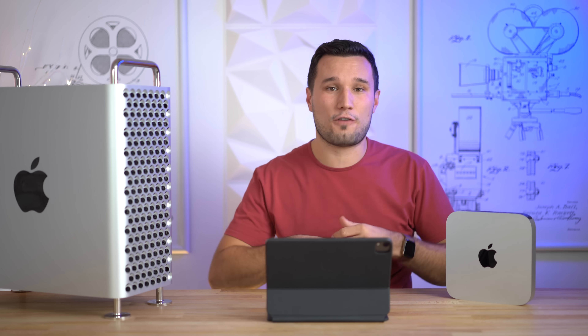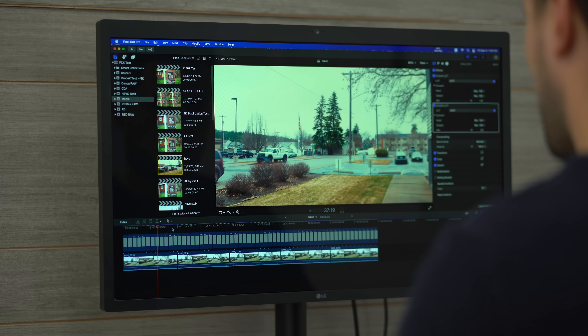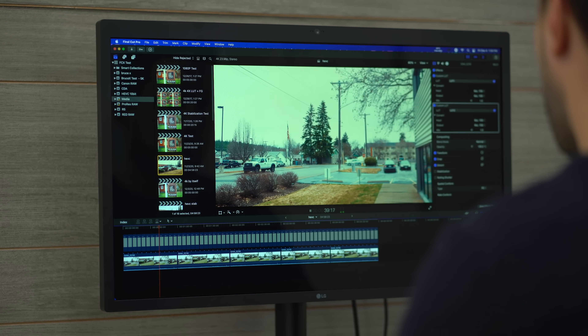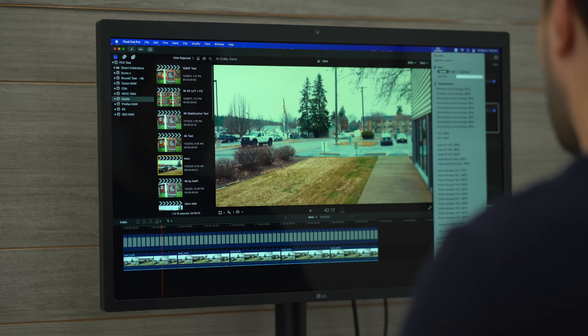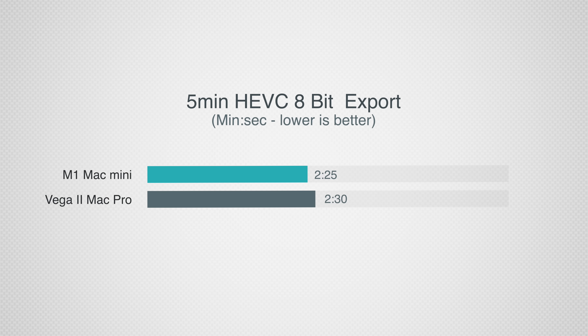I wanted to see if the performance difference was a GPU limitation, so I removed all effects — the export times didn't change at all, meaning we're limited by the encoders, not graphics performance. Switching to a similar project using H.265 footage, playback is no issue on both machines with color correction and effects. Exporting that project, the Mac Mini was actually five seconds faster than the Mac Pro because of its new decoders.